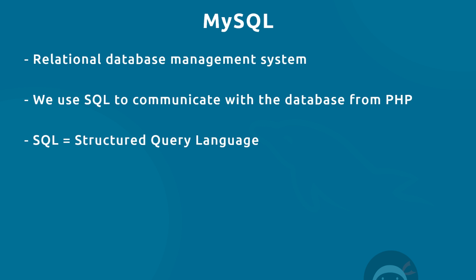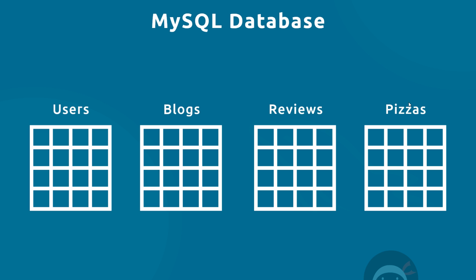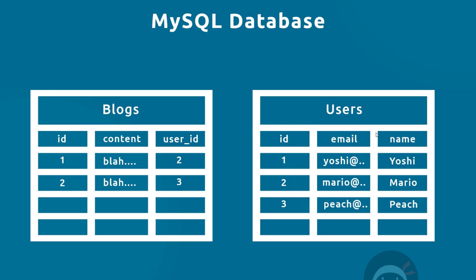A database can contain several different tables. In this example we've got four tables, and each table would normally be used to store a specific type of record or data — for example, a users table to store user data, a blogs table to store blogs, a reviews table, and a pizzas table. Each table is made up of rows and columns, where each row represents an individual record in that table.